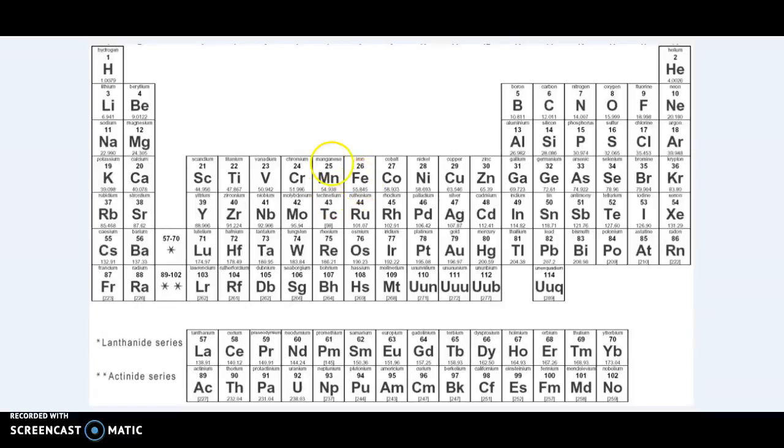Frequently you'll see iron, Fe, with a little Roman numeral two next to it. That means that it's iron two, which has a positive two charge. If you see iron three, which has a Roman numeral three after the symbol, that means that it's a positive three charge.